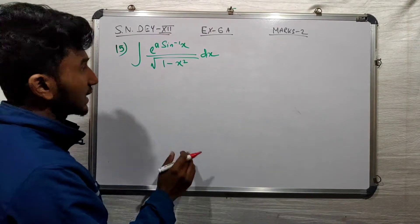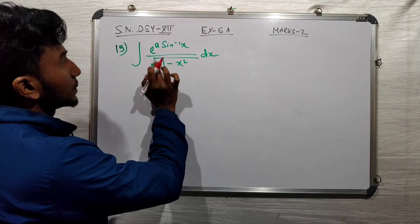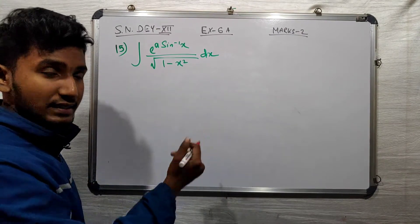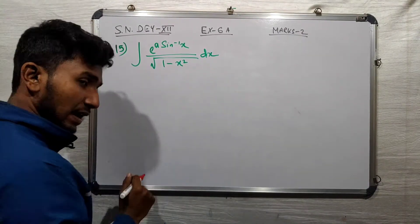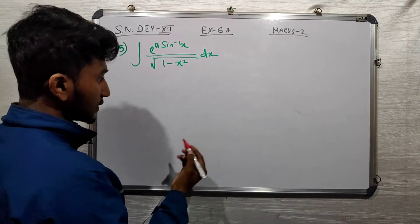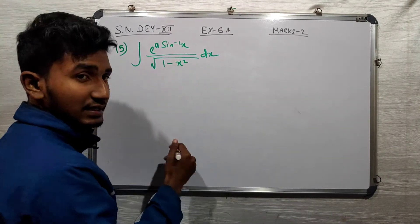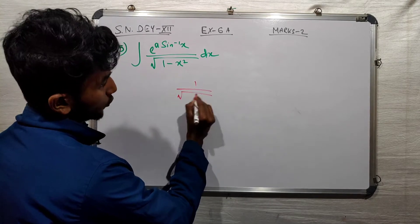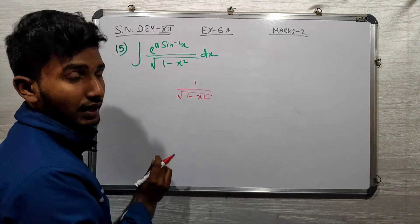Here is the integration: e to the power a sine inverse x by root over 1 minus x squared dx. We will use substitution. What we know is that the derivative of sine inverse x is 1 by root over 1 minus x squared.